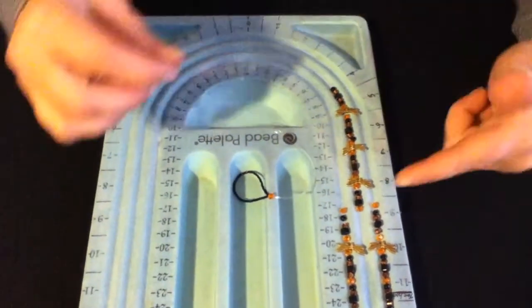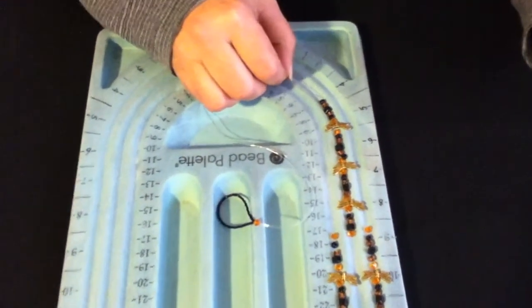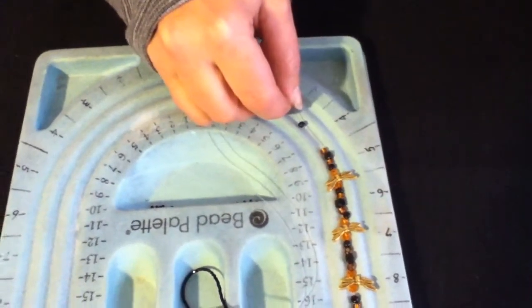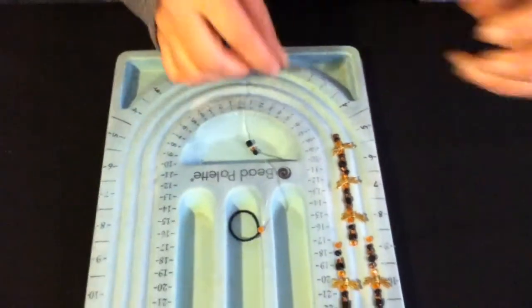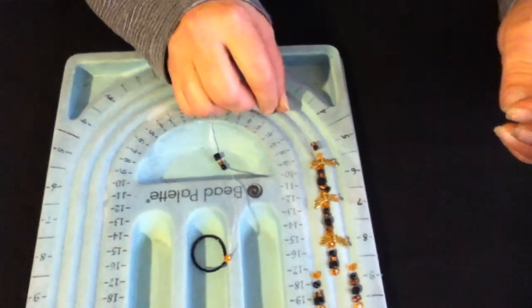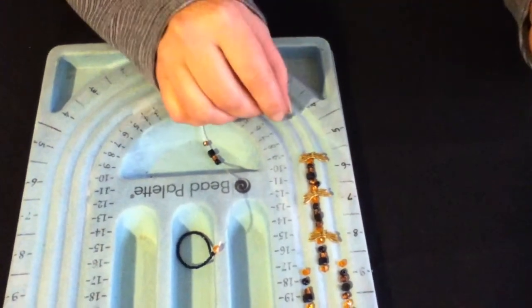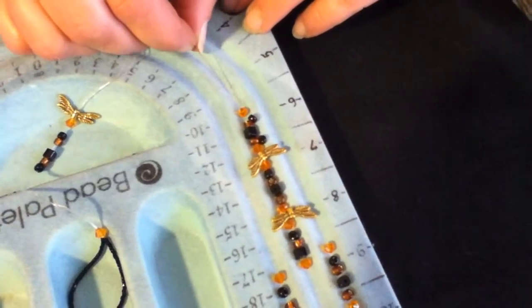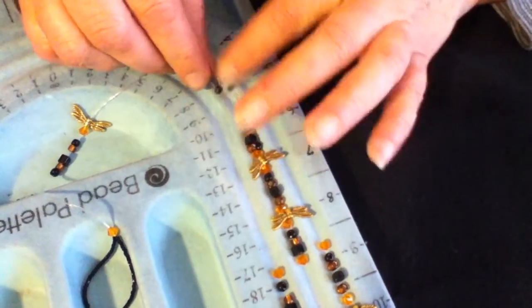And then from there, you will just simply bead the middle part. Depending on your foot size, again, will depend on exactly how many beads that you will need for this design. I chose bigger beads just so that we could go through this a little quickly or faster and show you exactly how this is done. And you just keep beading through until you have the middle section complete.